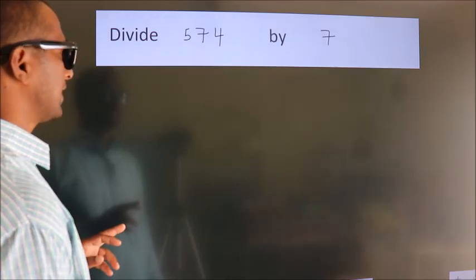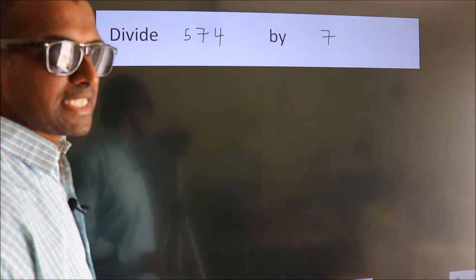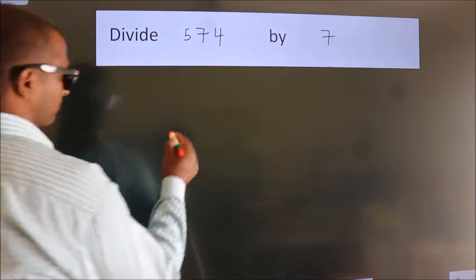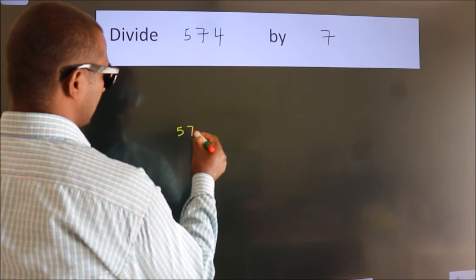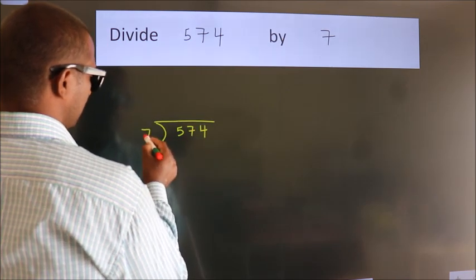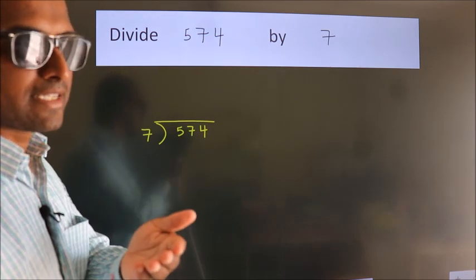Divide 574 by 7. To do this division, we should frame it in this way: 574 here, 7 here. This is step 1. Next.